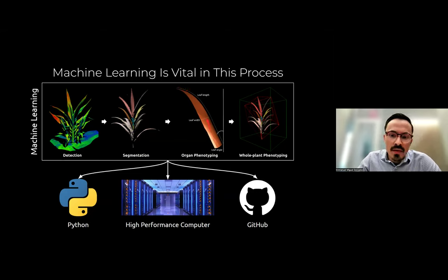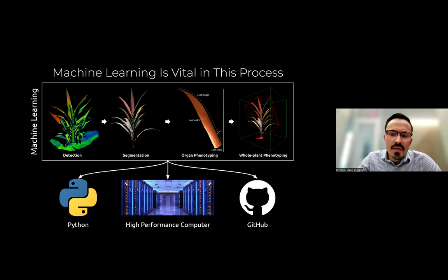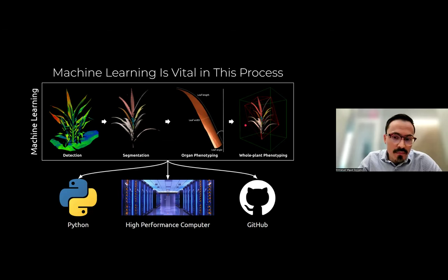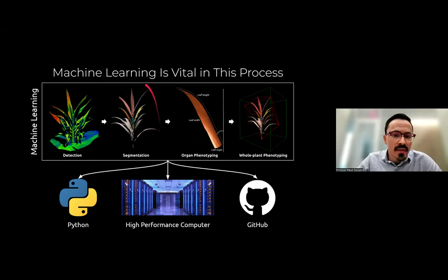We might do some organ phenotyping — studying a leaf's length, width, and angle. In addition, we might also be interested in whole plant phenotyping, extracting the volume or bounding volume. All of these traits could be used to identify genes associated with some beneficial stress response. Machine learning is quite vital in all of these steps — detection, segmentation, and even the phenotyping phase.